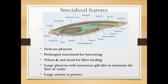Amphioxus is normally found in sandy beaches, and the notochord helps it burrow into the sand. The velum and oral hood assist in filter feeding. There is a large pharynx with numerous gill slits to maintain the flow of water. A large atrium surrounds the pharynx to protect it. These are the specialized features of Amphioxus.